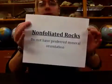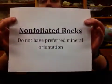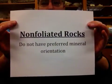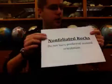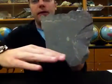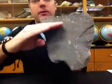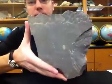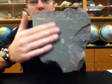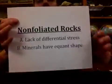Non-foliated metamorphic rocks do not have preferred mineral orientation. When we look at non-foliated rocks, we're going to see something that looks more massive. Rather than having any sort of alignment of crystals, we're looking at just a big massive chunk — something that's more homogenous, the same throughout the rock as a whole.